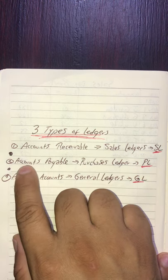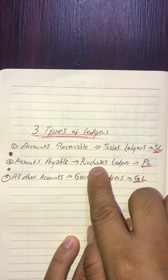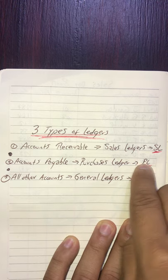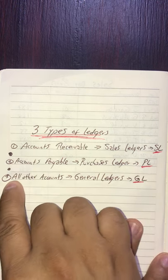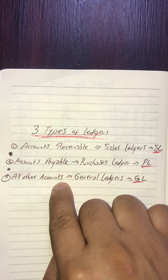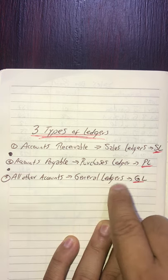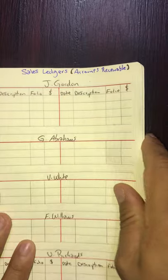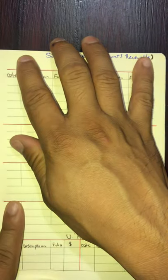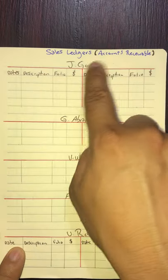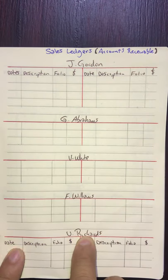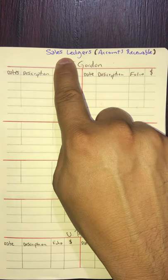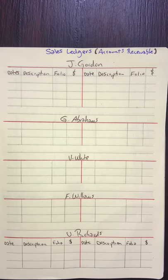For the next chapter, we will do accounts payable, which we will call the purchases ledger, abbreviated as PL. And all other accounts or T-accounts are referred to as general ledgers, abbreviated as GL. The accounts listed here are all accounts receivable — at least the first few — which we refer to as sales ledgers. I'll get to the GL shortly.